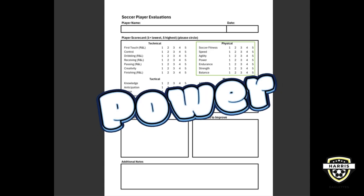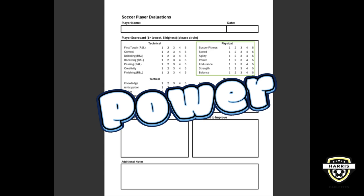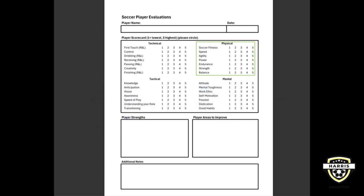Power combines strength and speed. It's what allows you to kick the ball harder, jump higher, or tackle more effectively. Building power through exercises like jumping and sprinting helps you make those impactful plays that can turn a game around. Another example of power is doing hill sprints, which are very effective at developing power in the legs to create leg drive and high knees, to push your body forward with a lot of power.